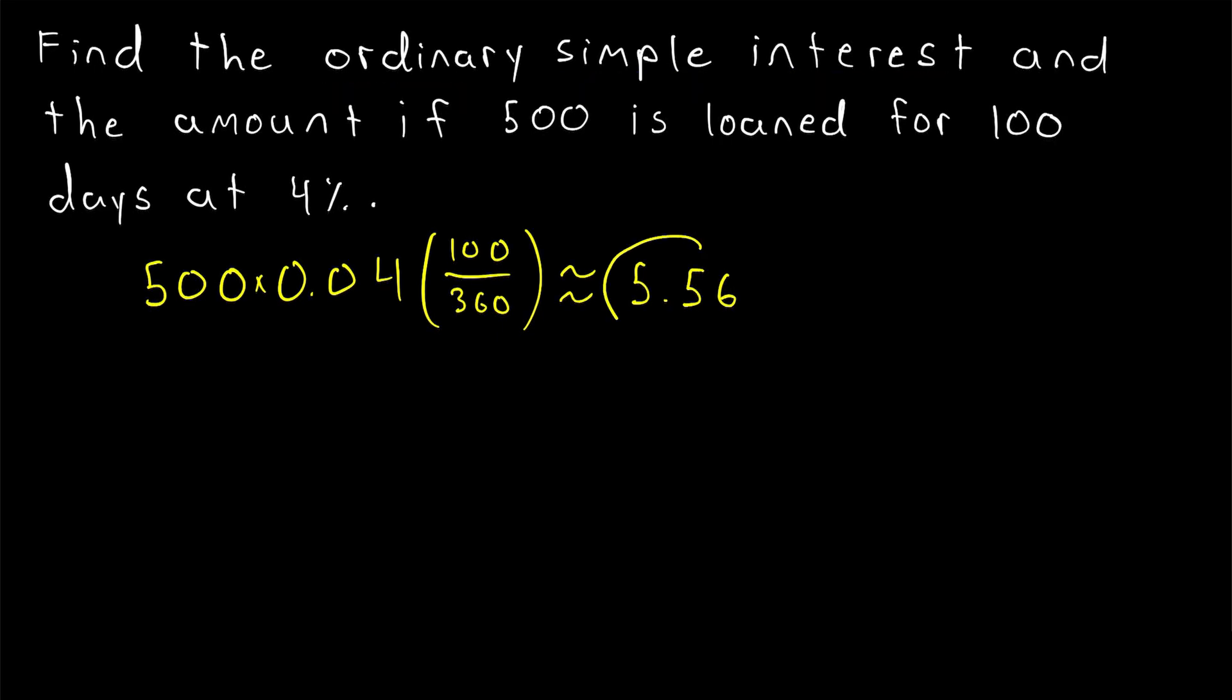So that's the first part of the question. The ordinary simple interest comes out to 5.56. The amount is just the sum of the principal plus the interest. So the amount A is equal to the principal loan, 500, plus the interest, which is about 5.56. So we might change this equality to approximately. And 500 plus 5.56 is of course 505.56. Remember, the 500 was loaned.